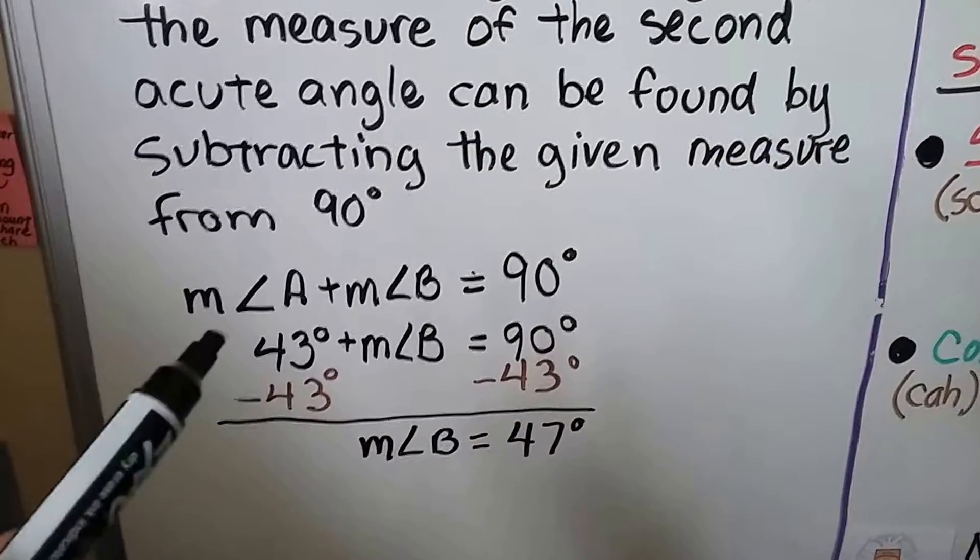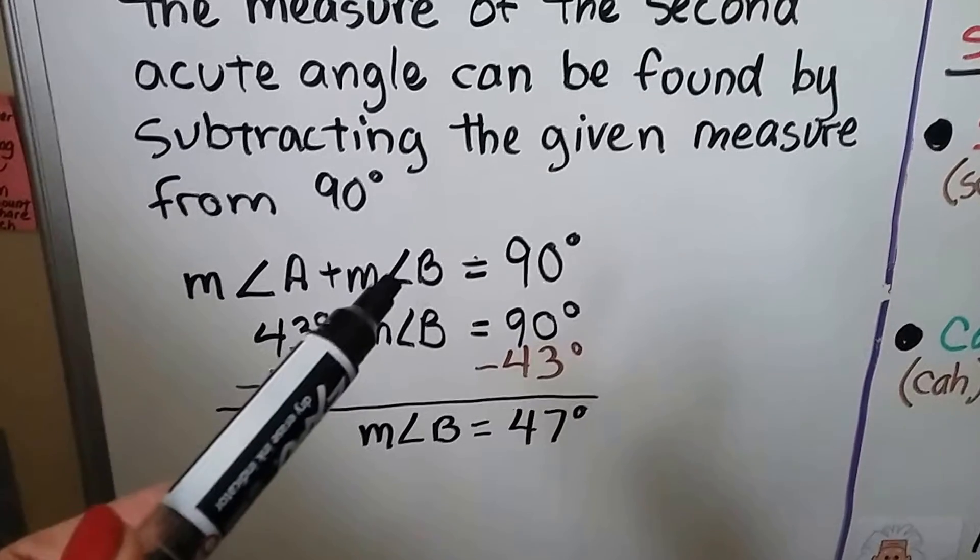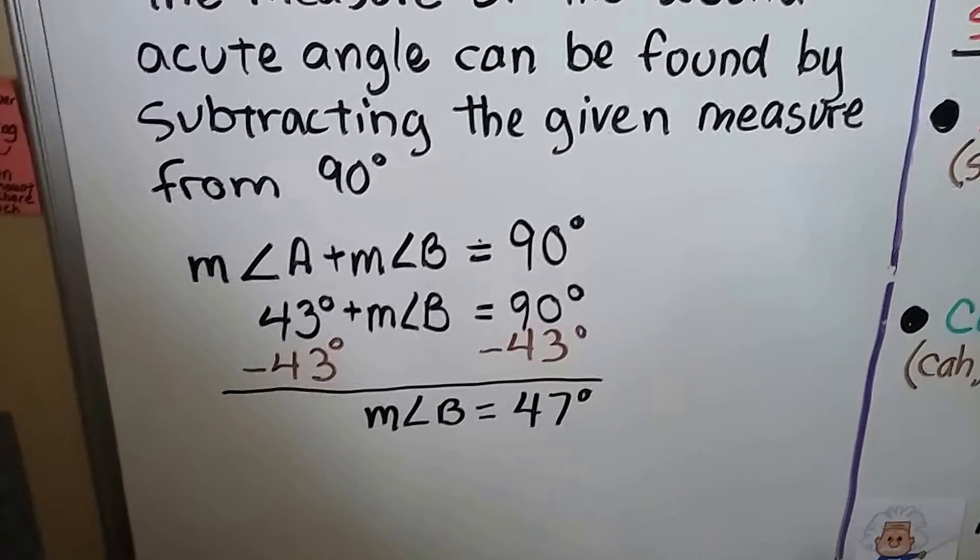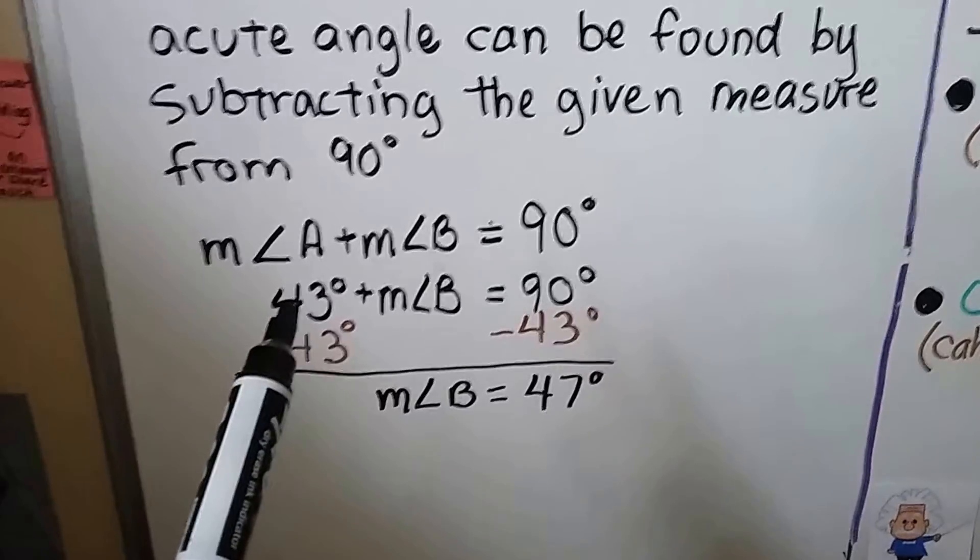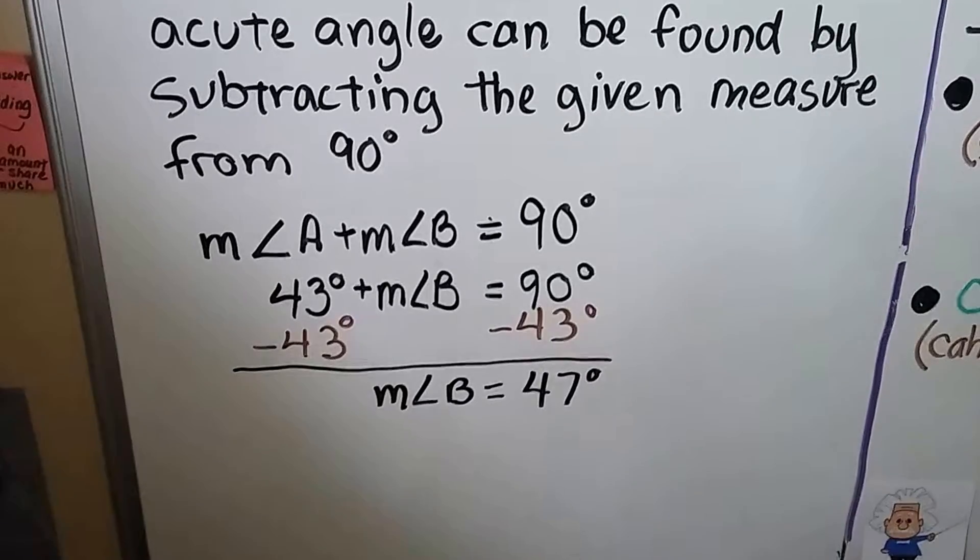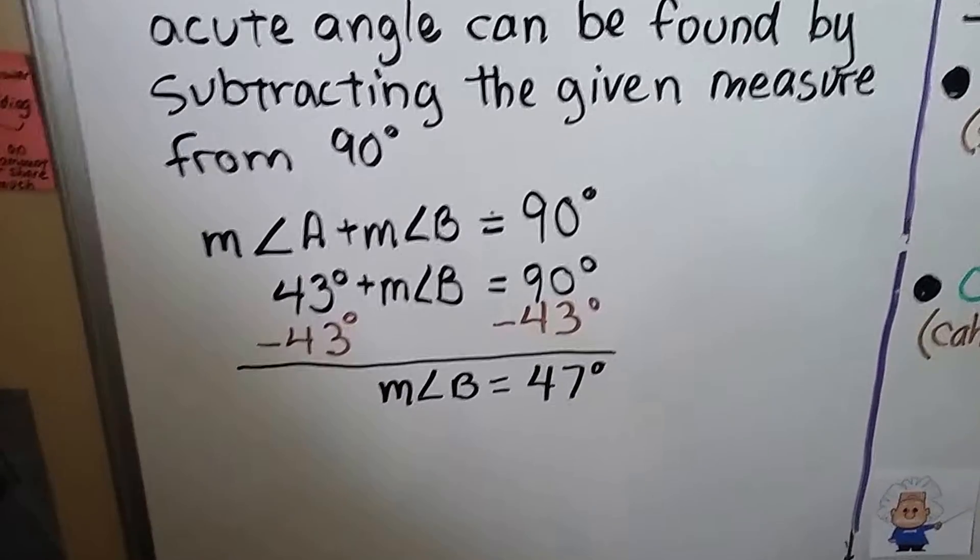So if they're complementary, the measure of angle A plus the measure of angle B will equal 90 degrees. If we know the measure of angle A is 43 degrees, well then we know the measure of angle B is 47 degrees.